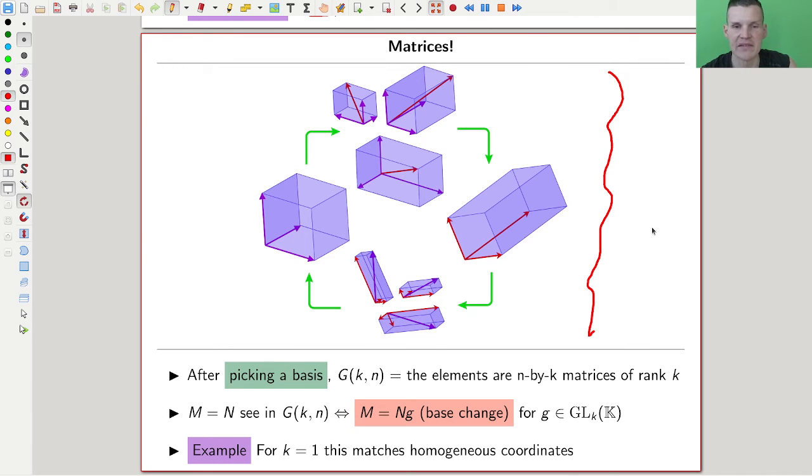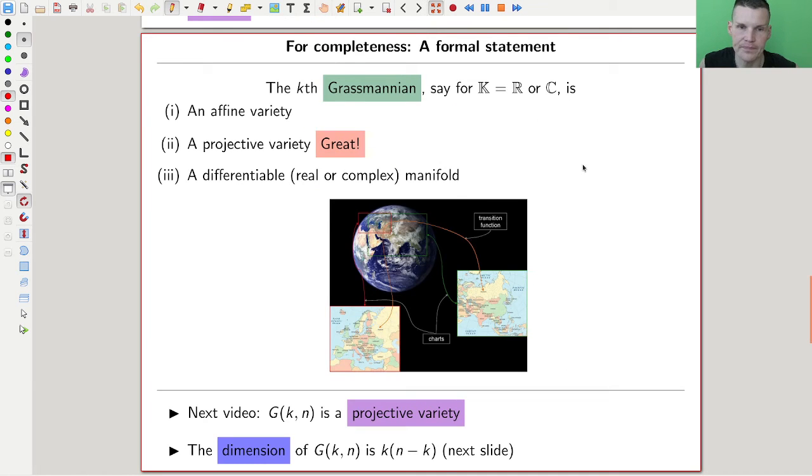Those matrices are the same if and only if they are obtained from one another by base change. For k equals one, this is exactly the generalization of homogeneous coordinates, because what is a base change in a one-dimensional space? It's identifying points up to a scalar. The correct generalization of homogeneous coordinates is taking matrices of a certain rank up to base change from one side, column or row equivalence. This gives you a hands-on picture of what elements in the Grassmannian are: they're rank k matrices.